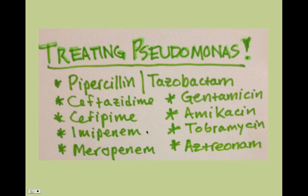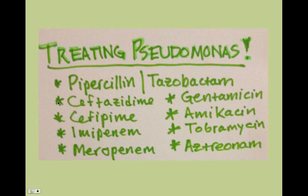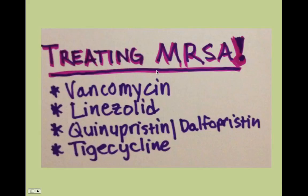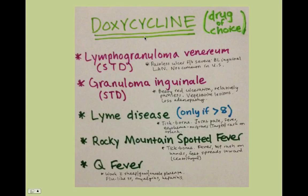Let's review. How do we treat Pseudomonas? We've got piperacillin-tazobactam (probably the most common), ceftazidime (third-generation cephalosporin), cefepime (fourth-generation), imipenem and meropenem (carbapenems), and gentamicin, amikacin, tobramycin (aminoglycosides), plus aztreonam (only effective against gram-negatives). All nine of these are good to treat Pseudomonas. For MRSA: vancomycin, linezolid, quinupristin-dalfopristin, and tigecycline. Remember doxycycline — just memorize the things you use it for, because it covers a lot of random diseases.